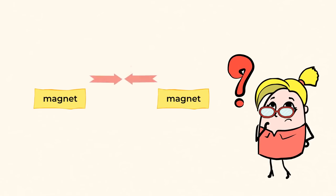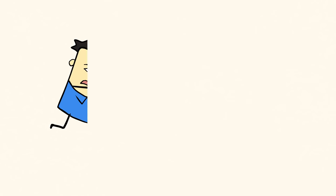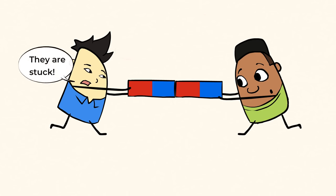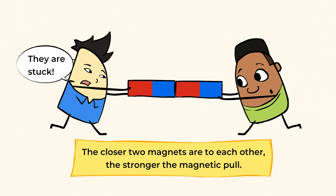Now what do you think would happen if you had two magnets that were attracted to each other? You may have seen something like this before. Two magnets can get stuck together and it is really hard to pull them apart. This is because the closer two magnets are to each other, the stronger the magnetic pull.